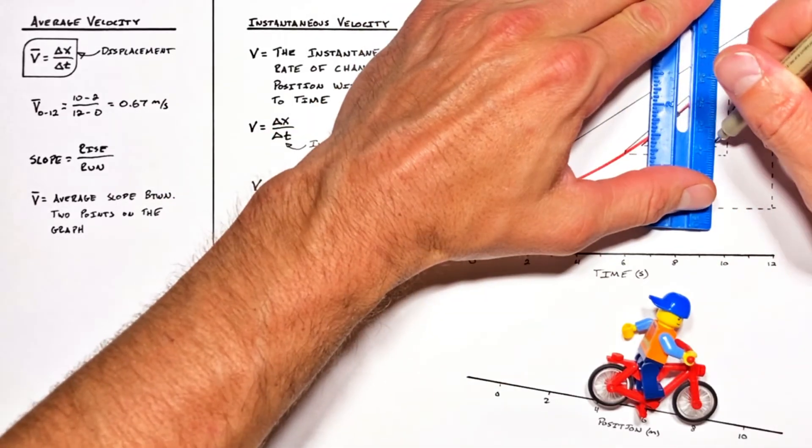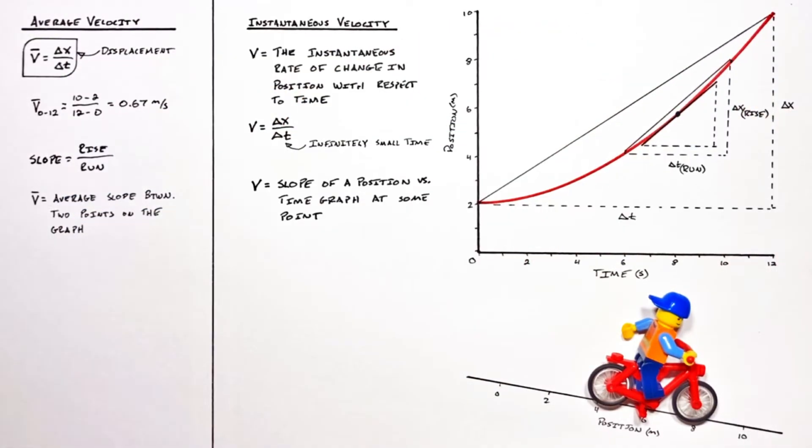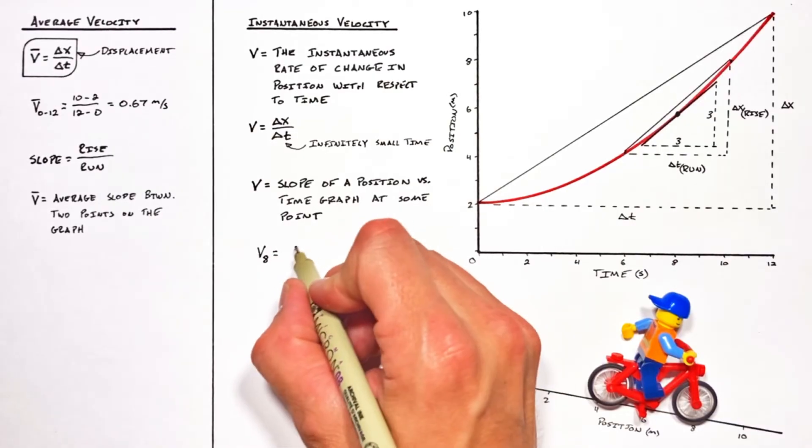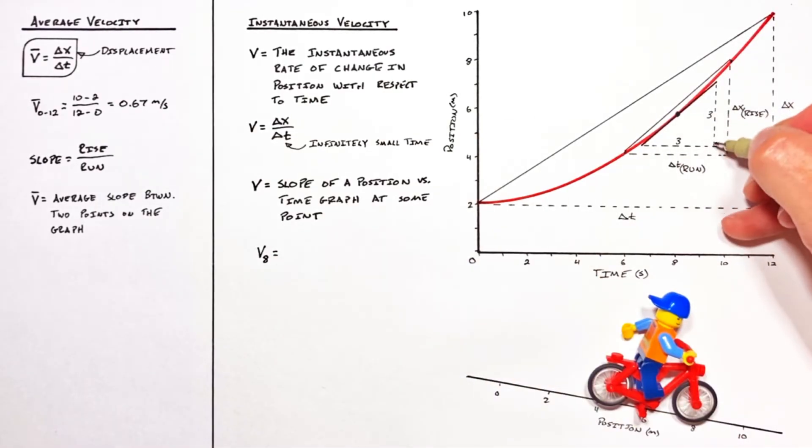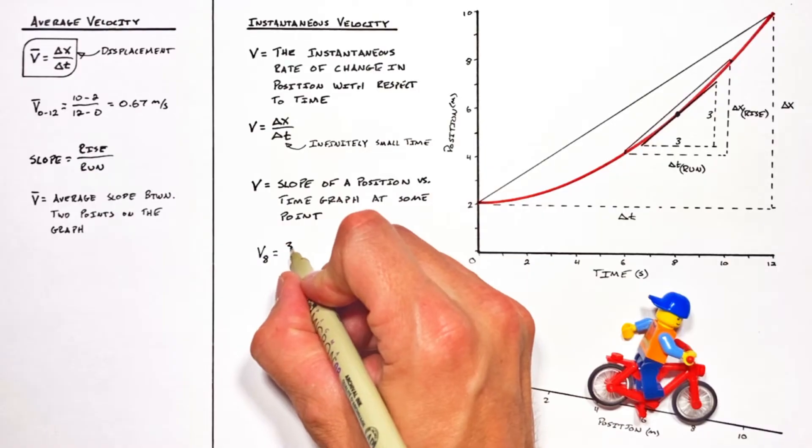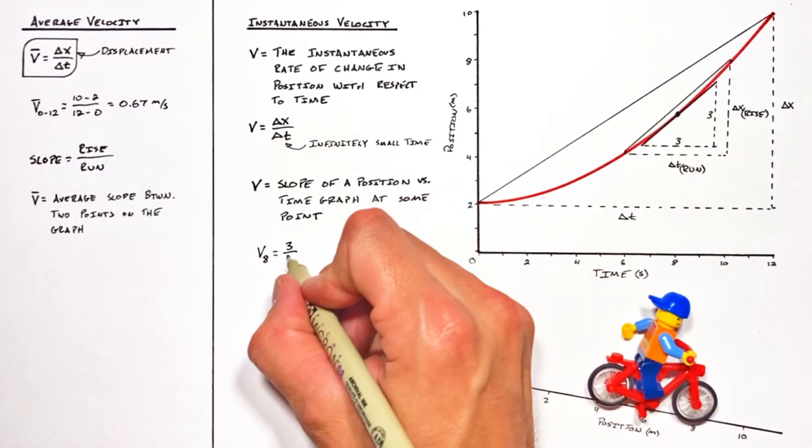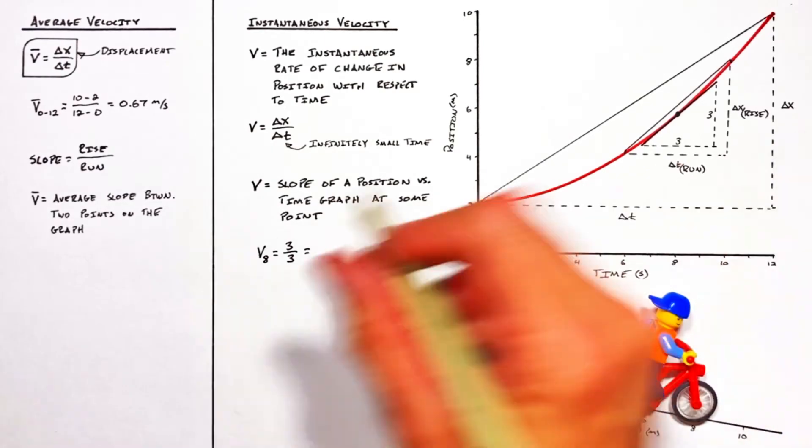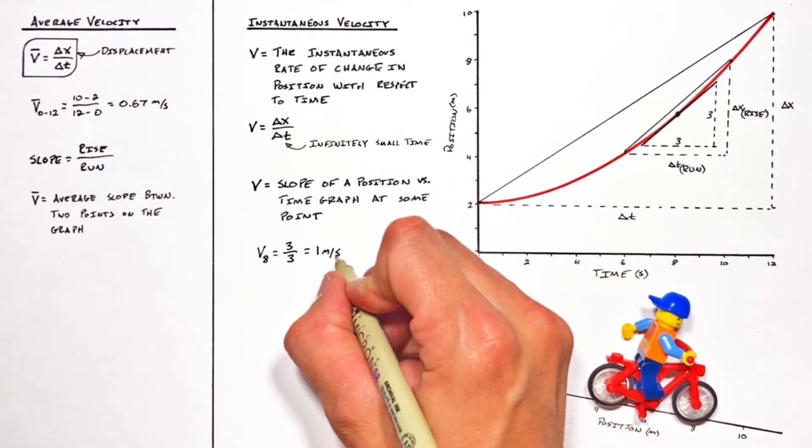So measuring out the slope of our tangent line, we find the velocity at a time of eight is equal to the rise of our tangent line, that's three, over the run, also three, which gives us a velocity at a time of eight seconds equal to one meter per second.